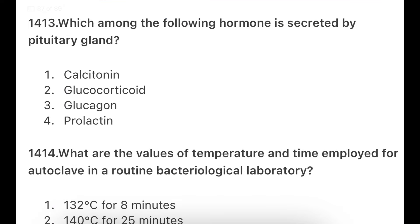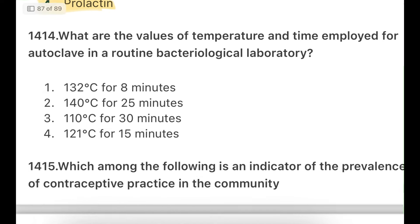Next: Which among the following hormones is secreted by the pituitary gland? Options: calcitonin, glucocorticoid, glucagon, prolactin. Prolactin is secreted by the pituitary gland. Calcitonin is secreted by the parathyroid gland. Glucocorticoids come from the adrenal cortex (adrenal gland). Glucagon is secreted by the pancreas. So prolactin is the correct answer — it is secreted by the pituitary gland.